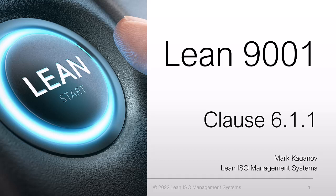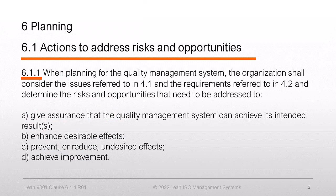Welcome everyone. I'm happy to see you on our Lean channel. Today we will talk about element 6.1.1 of ISO 9001:2015 standard — actions to address risks and opportunities.